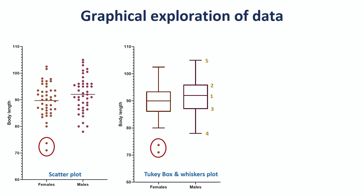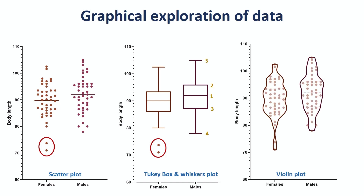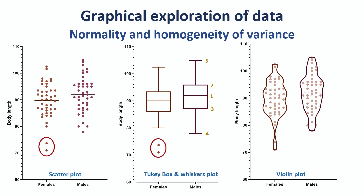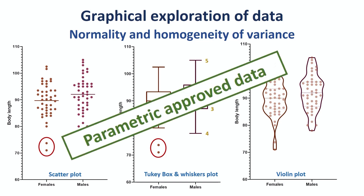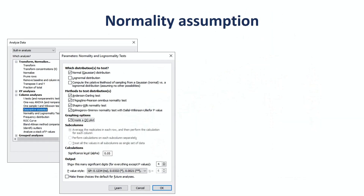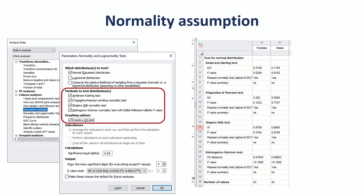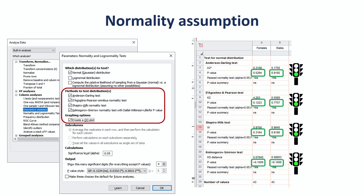PRISM 8 has a cool new feature: the violin plots. They can be very powerful tools to explore data behavior, especially when exploring big data sets. To recapitulate, these three graphs show symmetry, indicative of normality, and homogeneity of variance. So these data seem suitable for a parametric approach. However, if we want further reassurance about normality, we can use formal tests. PRISM 8 runs four of them by default, of which D'Agostino-Pearson and Shapiro-Wilk are perhaps the most widely used. The conclusion should be the same: there is no significant departure from normality, meaning our data passed the normality test, which does not come as a surprise after our graphical examination.